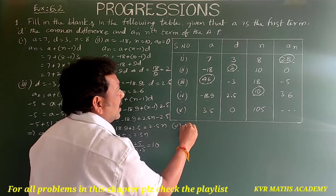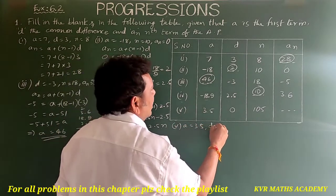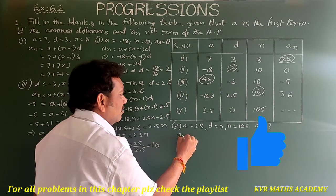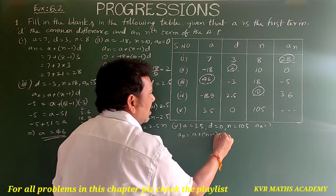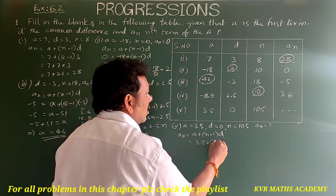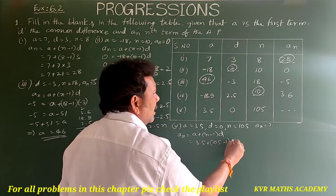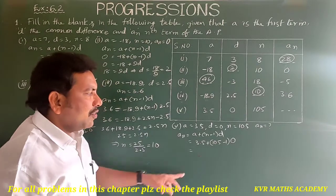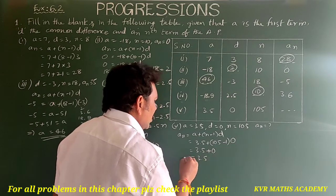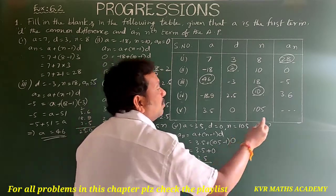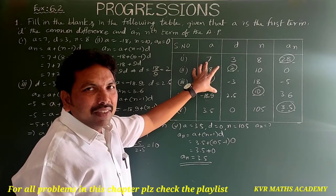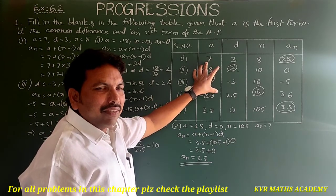Sub-problem 5: a = 3.5, d = 0, n = 105, and an is unknown. Using the formula an = a + (n - 1) × d: an = 3.5 + (105 - 1) × 0 = 3.5 + 104 × 0 = 3.5 + 0 = 3.5. So an = 3.5. These are all the missing values for the given table.